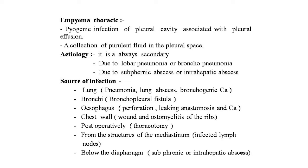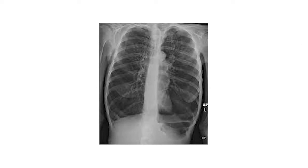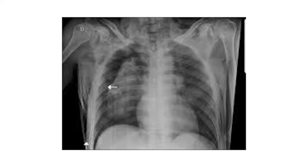Empyema thoracis: the term is generally applied to pyogenic infections of the pleural cavity associated with pleural effusion — a collection of purulent fluid in the pleural space. Etiology: it is always secondary — due to lower-lobe pneumonia or bronchopneumonia, subphrenic abscess, or intrahepatic abscess. Sources of infection include lung (pneumonia, lung abscess, bronchogenic carcinoma), bronchopleural fistula, esophageal perforation, leaking anastomosis, carcinoma, chest wall wound, osteomyelitis of the ribs, post-thoracotomy, infected mediastinal lymph nodes, and subphrenic or intraphrenicabscesses.